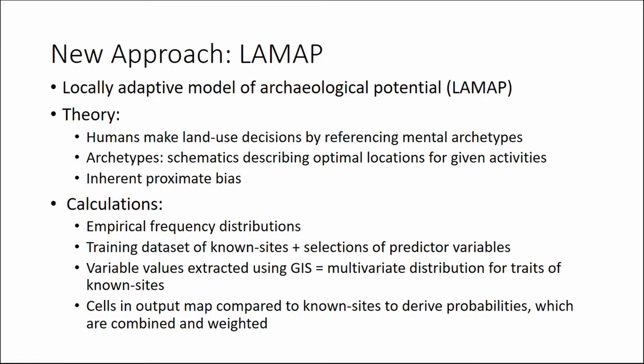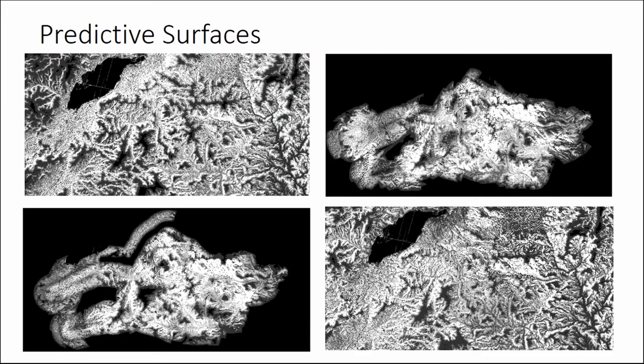The output is a raster image where each pixel is compared to the multivariate distributions for each known site. The result is probabilities of cohesion which are combined and weighted to give a number representing archaeological potential. Here are some of the predictive surfaces generated: top left is the late prehistoric surface, top right is Hellenistic, bottom left is late antique, and bottom right is Ottoman. There's quite a bit of variability across these surfaces.